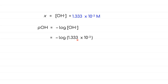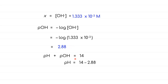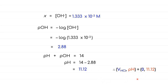The pOH of NH₃ is found to be 2.88, and subtracting from 14 gives pH = 11.12. We can already plot the first point on the curve: when no titrant has been added (volume = 0), the pH is 11.12.